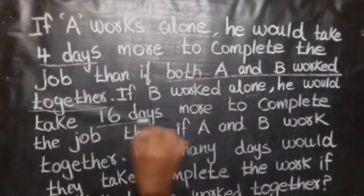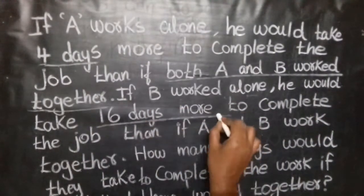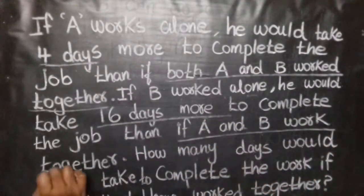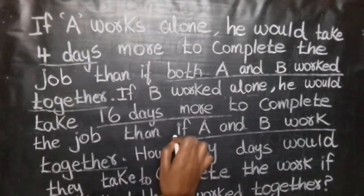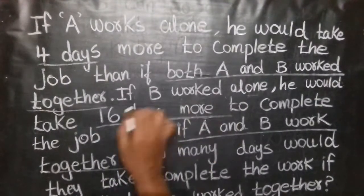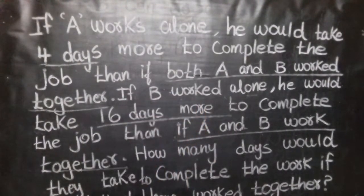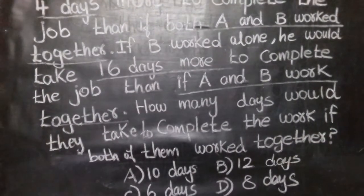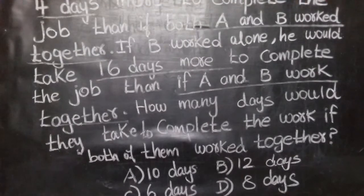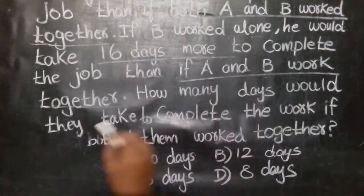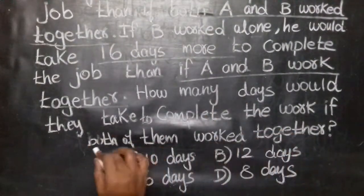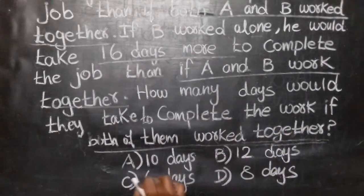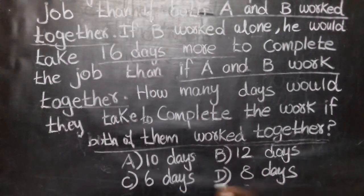Example question: A would take 16 days more to complete the job than if A and B worked together. B takes 4 days more than A and B together. How many days would they take to complete the work if both of them worked together? Options are 10, 12, 6, or 8 days.